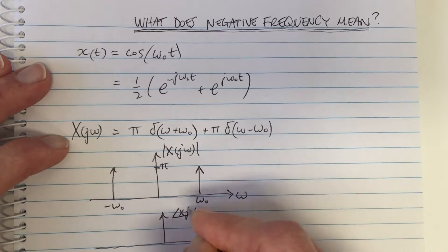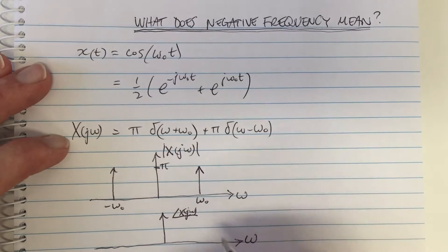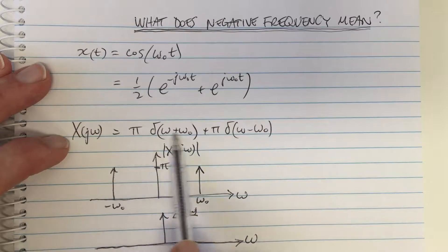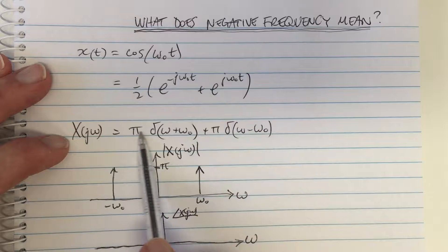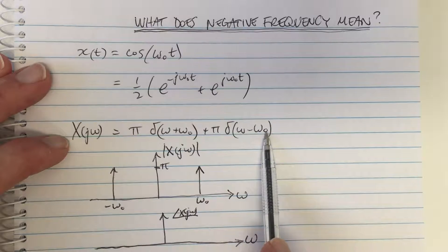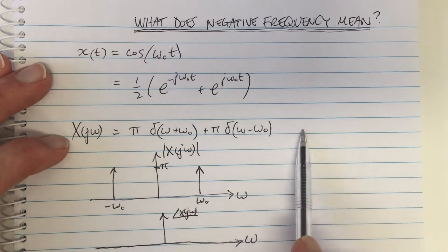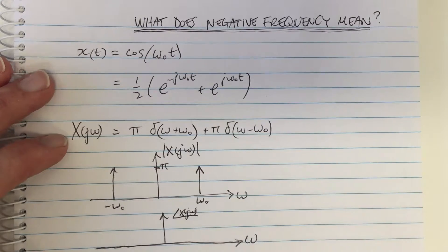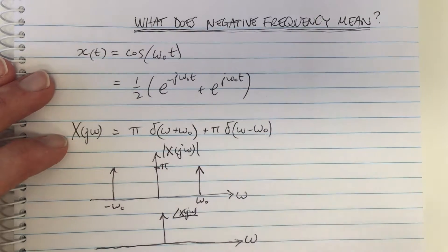Now in this case, for this signal, this cos wave, the phase is zero everywhere. It's just real. This equation here, this signal here, only has real elements. There's no plus j of something or other. There's no complex component. Just real, in this case.